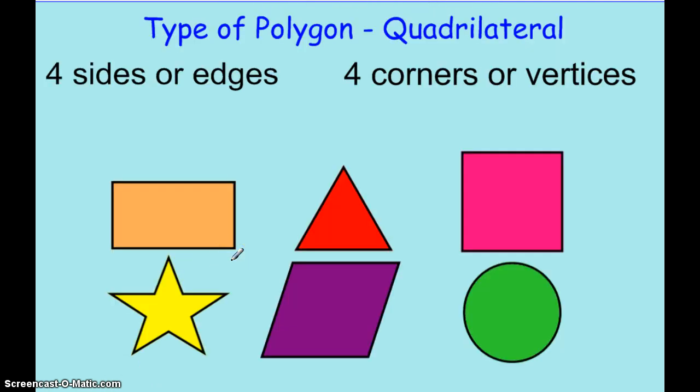One type of polygon that we're going to learn about is a quadrilateral. A quadrilateral has 4 sides or edges and 4 corners or vertices.